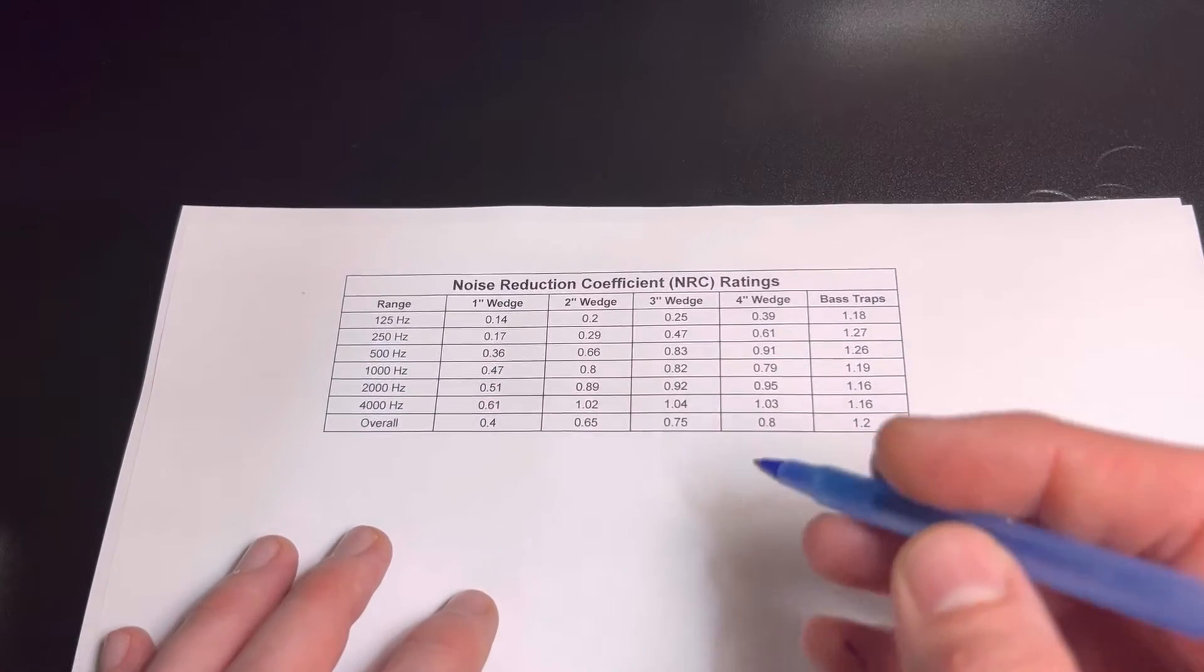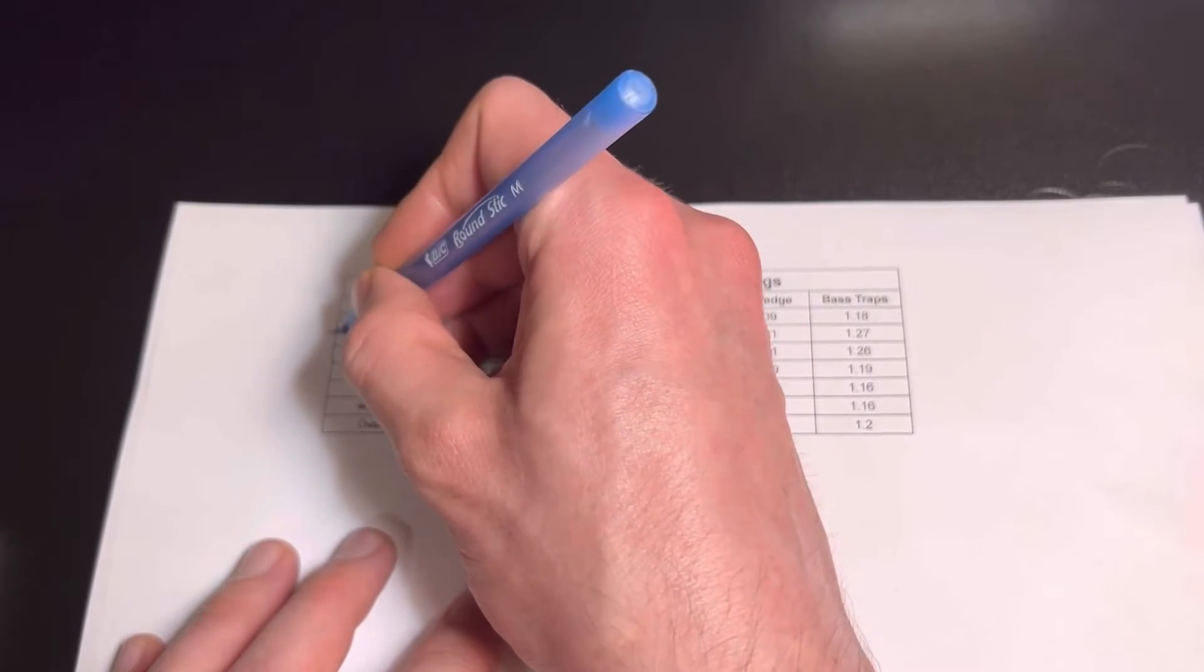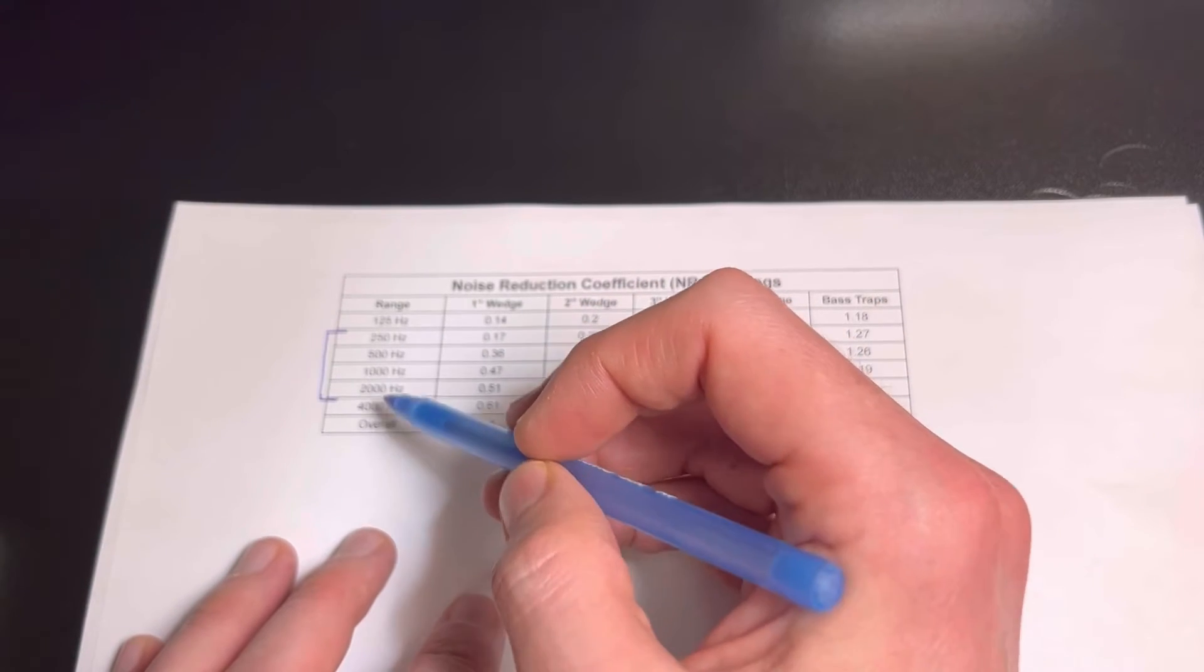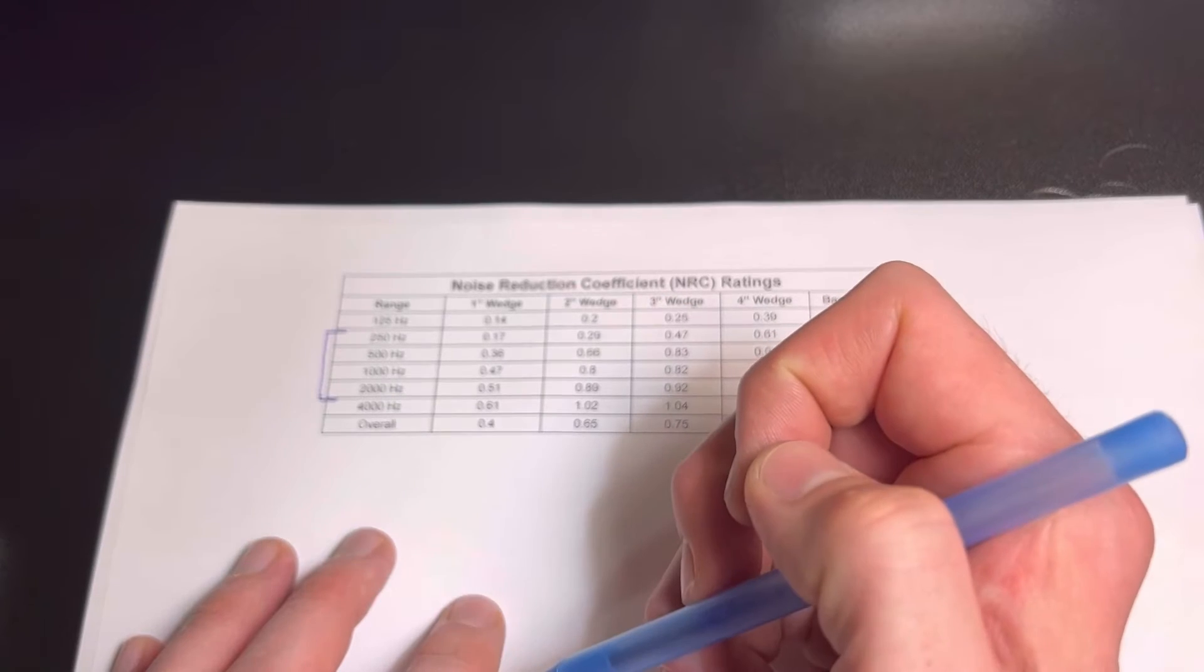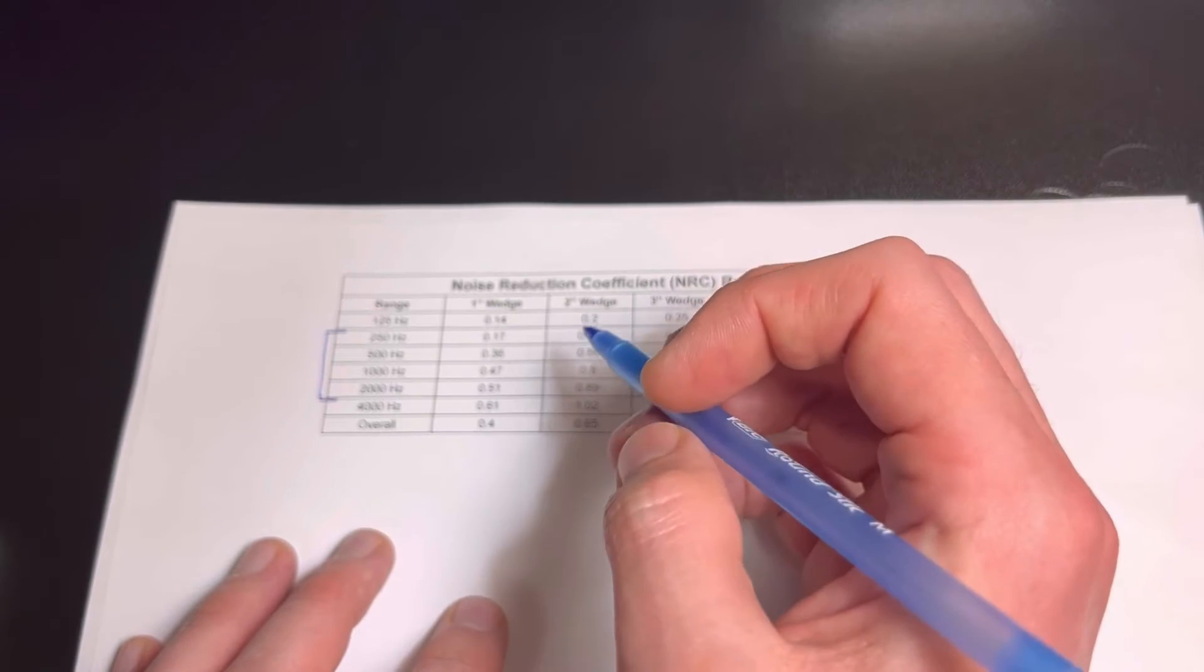What we're going to need to do to calculate NRC is we're going to need to focus on four frequency bands: 250, 500, 1000, and 2000. And we're going to take those numbers and find the average of those.